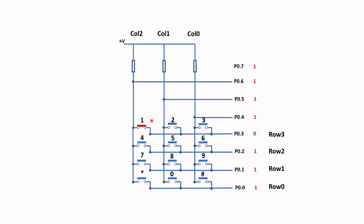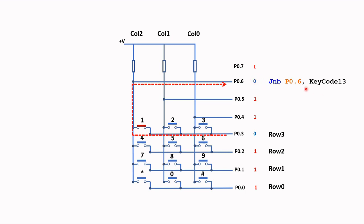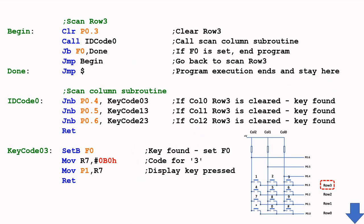This time we press key number 1, which makes the connection to P0.6. We then use JNB P0.6 to check for zero; if it's zero, we call the subroutine to display a 1 on the 7-segment. Here is the code for the discussion we have just made.